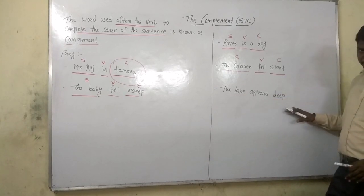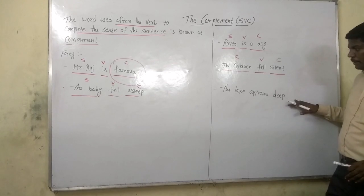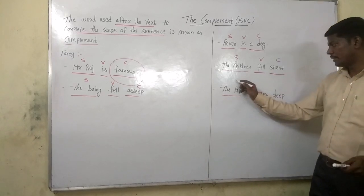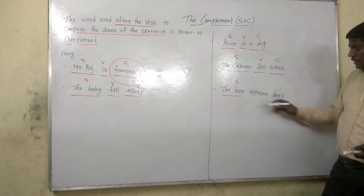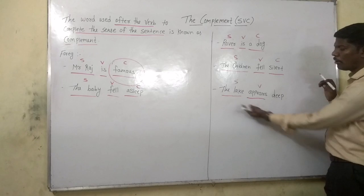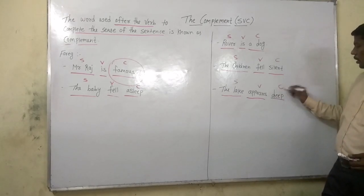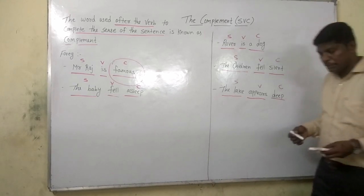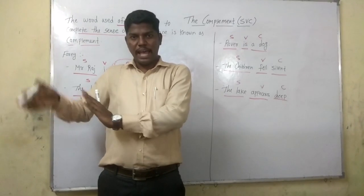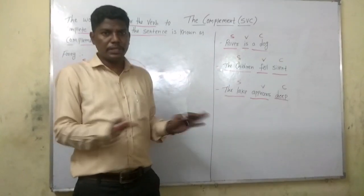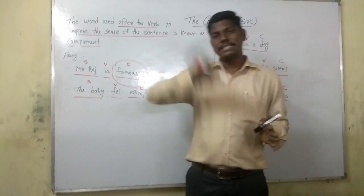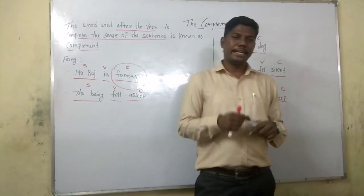Now see the last example: 'The lake appears deep.' The main part of the sentence, the doer, is 'the lake' — that is the subject. 'Appears' is the verb, the action word. And 'deep' is completing the sense of the sentence, so 'deep' is the complement. You might have understood what complement is all about. In the last lecture we studied subject plus verb plus object, and in this lecture we saw complement — that is S plus V plus C. See you in the next lecture. Thank you so much.